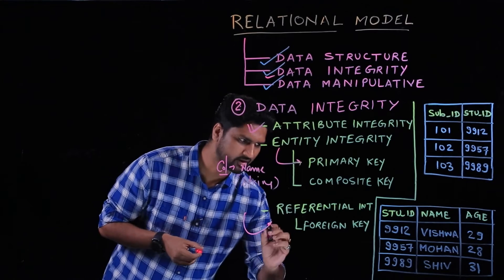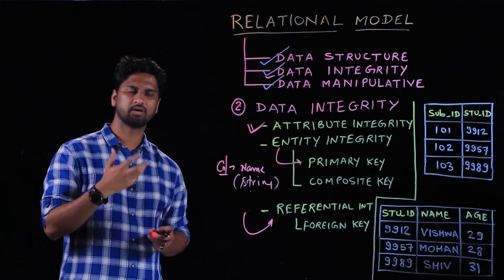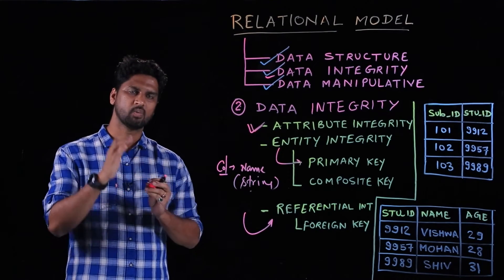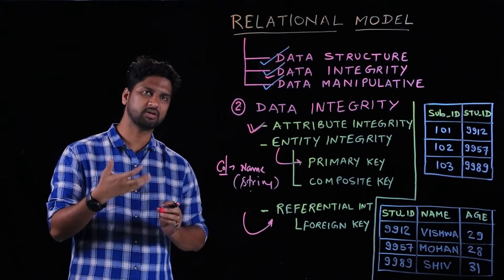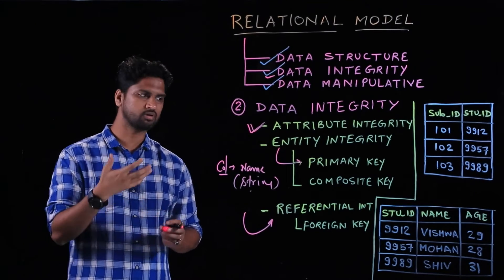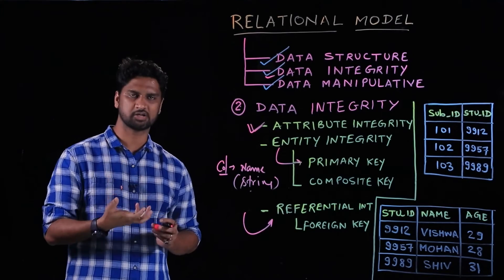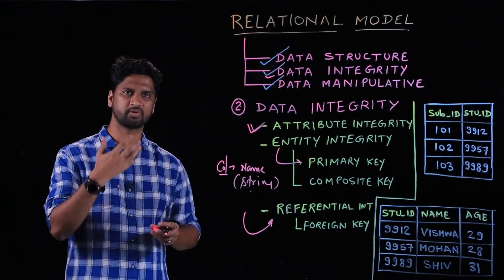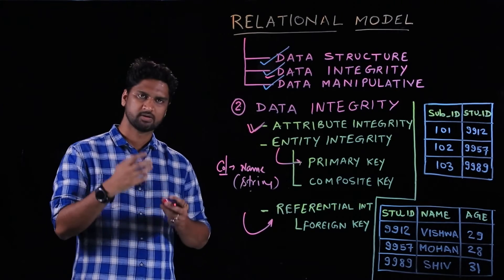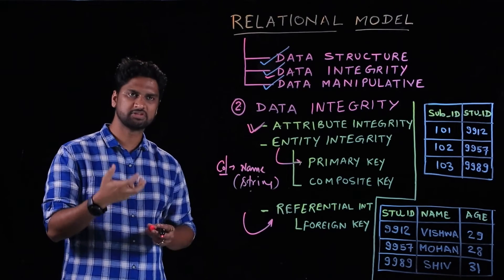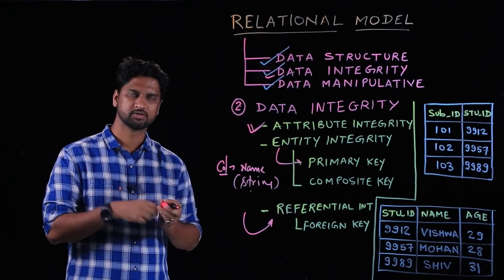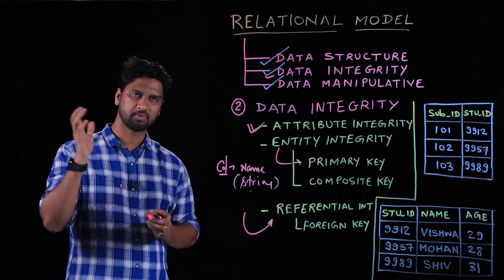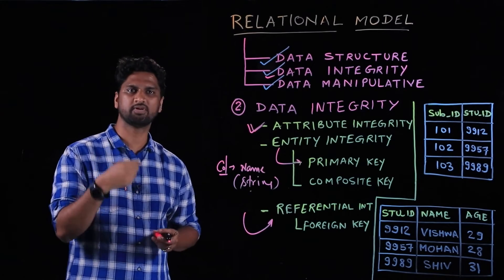The third important aspect is referential integrity. Referential integrity talks about the relationship between tables. It makes sure that whatever relationship has been defined is intact and not broken. In the relational database world, we achieve referential integrity with the help of the foreign key, which helps you relate two tables.